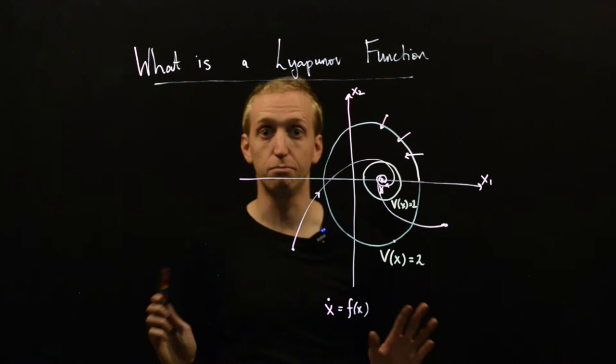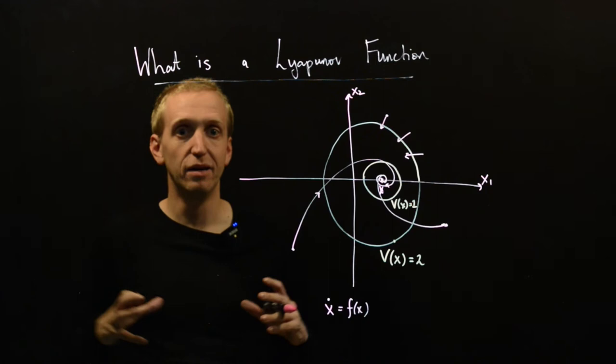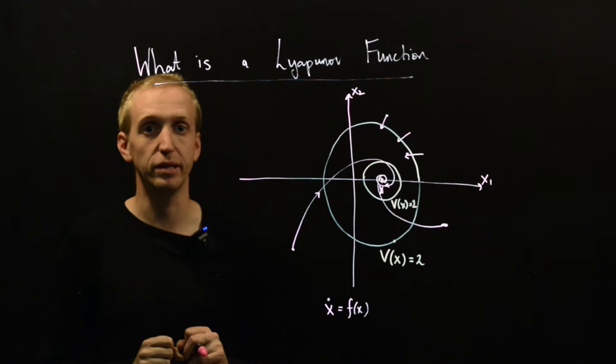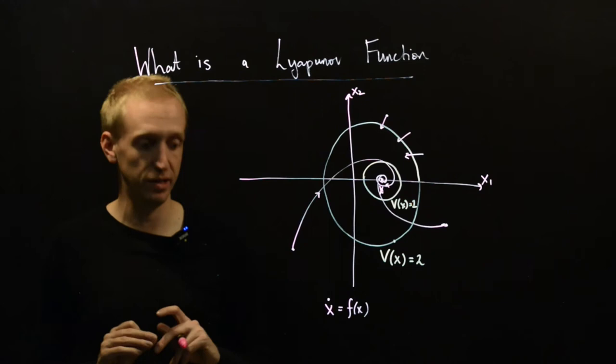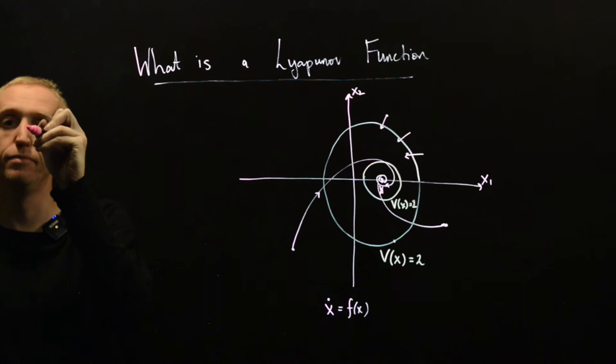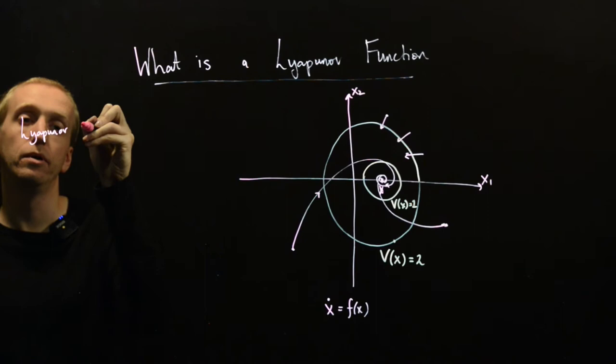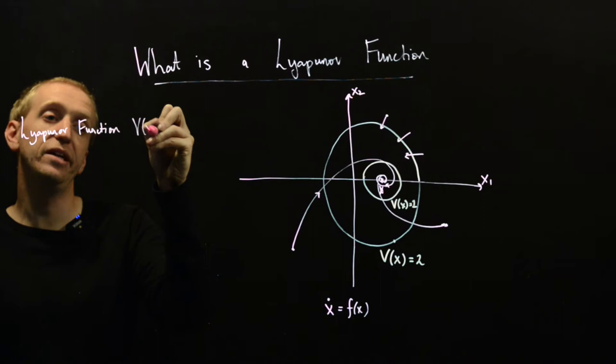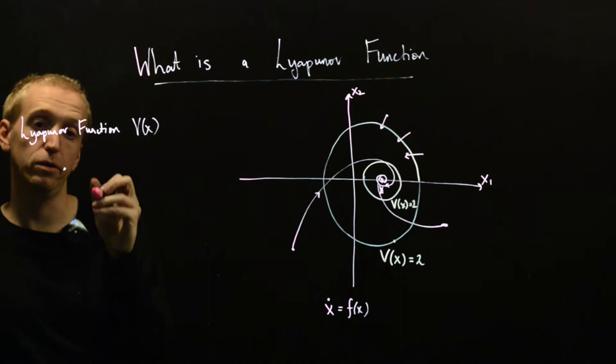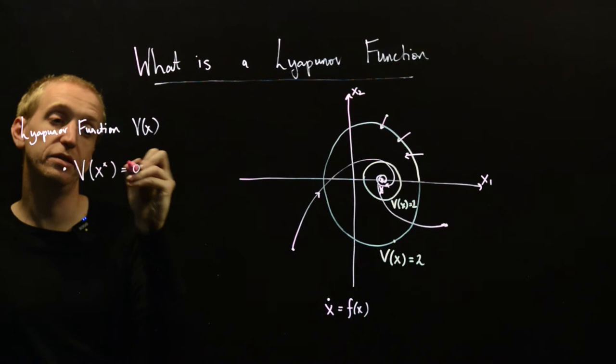So we're now going to start to write down some properties of Lyapunov functions that will capture this idea of moving from high energy to low energy, and therefore towards equilibrium points, or limit cycles, or whatever we want. But we're going to talk about the equilibrium points for now. So let's suppose, so we have our Lyapunov function, v of x, and what properties does it need to satisfy?